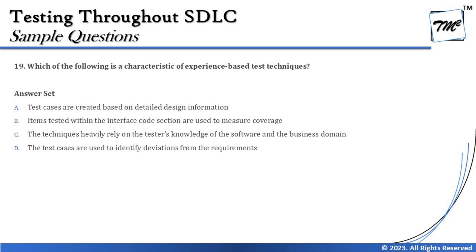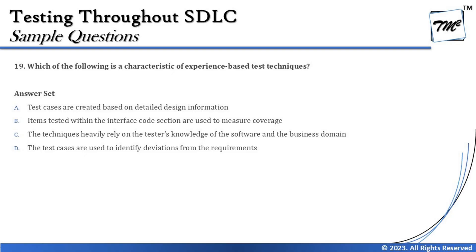Option B says items tested within the interface code section are used to measure coverage. The word 'interface' is a synonym for interaction, communication, and integration, which takes you back to the same concept discussed in option A — that makes option B wrong with respect to experience-based test techniques.